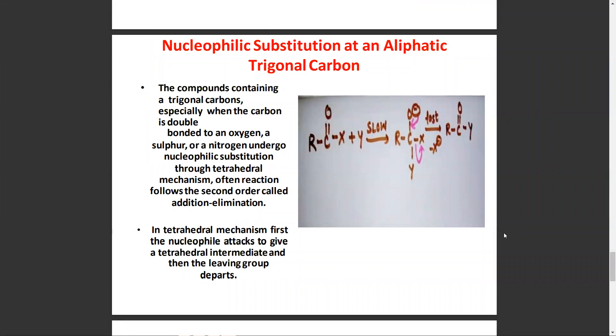Nucleophilic substitution at aliphatic trigonal carbon: The compounds containing a trigonal carbon, especially when the carbon is double bonded to an oxygen, a sulfur, or nitrogen, undergo nucleophilic substitution through a tetrahedral mechanism. Often these reactions follow second order kinetics and are called addition-elimination. In the tetrahedral mechanism, first the nucleophile attacks to give a tetrahedral intermediate, and then the leaving group departs.